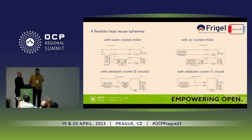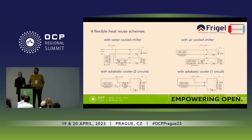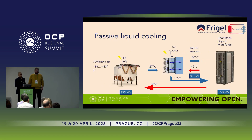There are four solutions shown here. With a chiller, when a customer still wants 20-degree air in the cold aisle, the system can be air-cooled and reuse heat only from the liquid cooling part. If the customer understands that we can shift to adiabatic coolers and eliminate chillers, we can significantly reduce the energy consumption.